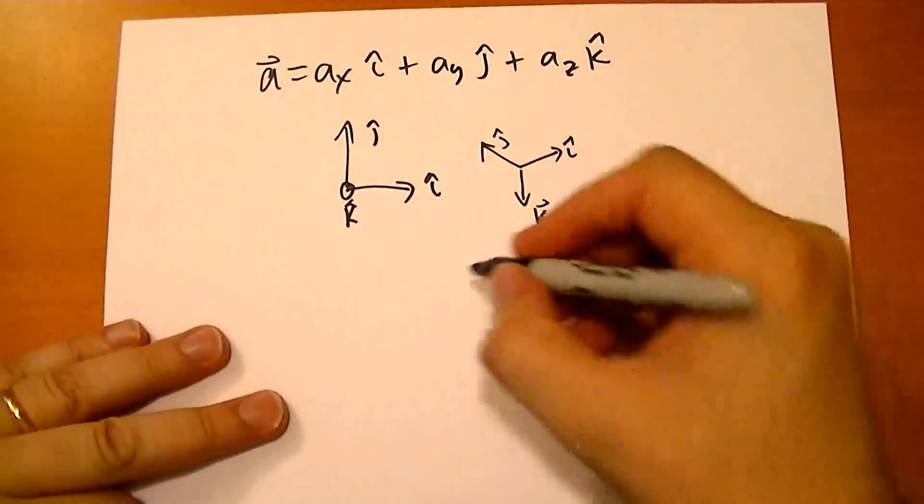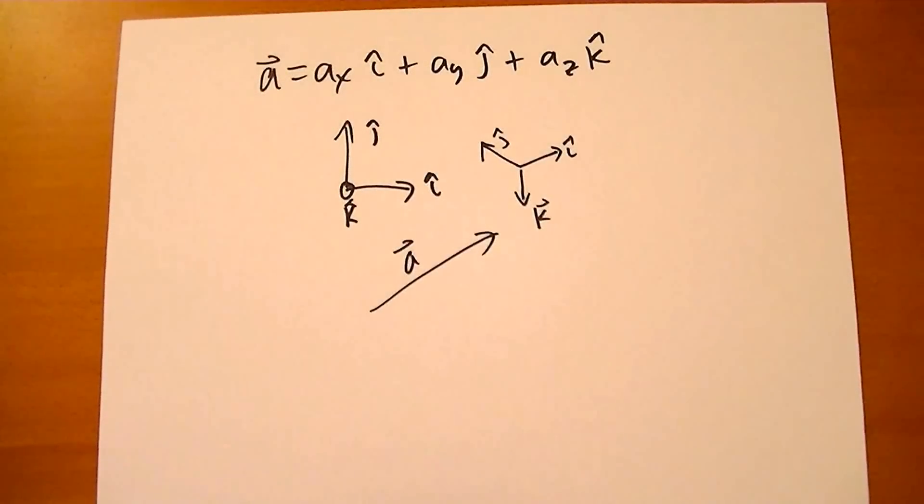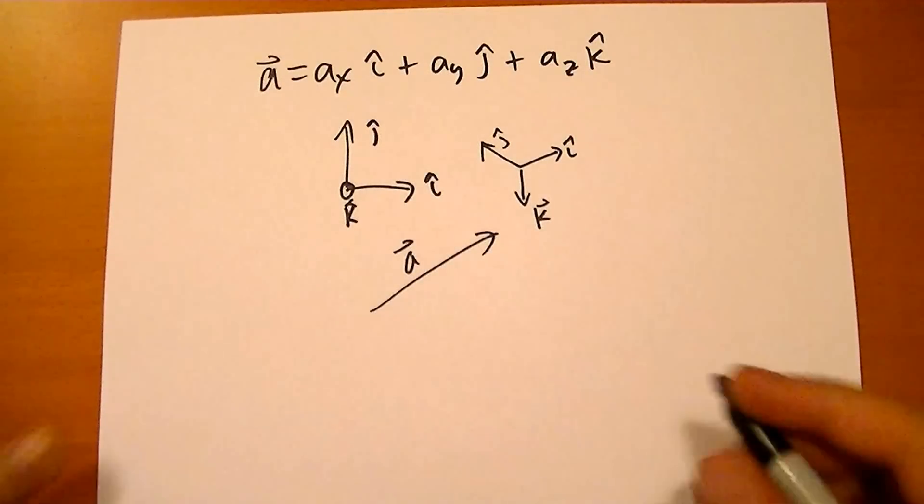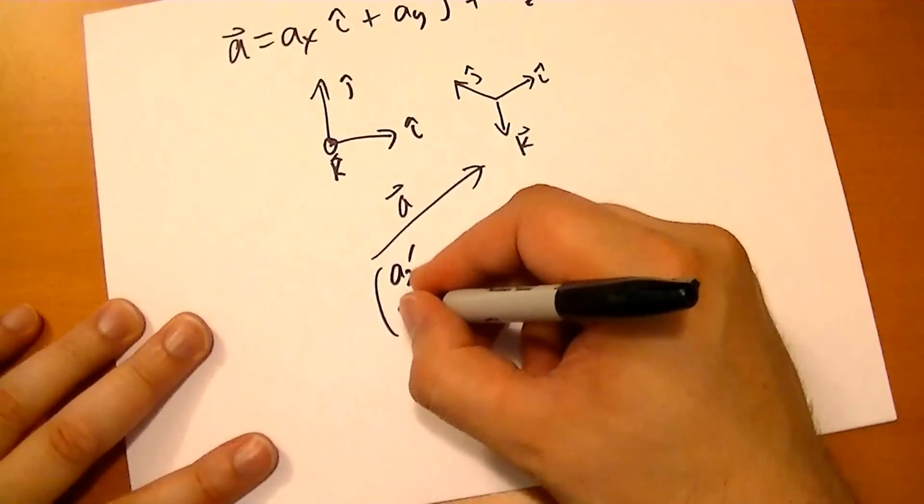You have the same vector. A vector hasn't changed, it's just you're expressing it with different components. And he walks through a rotation through two dimensions, and then he jumps to and says that in three dimensions you basically have this formula.